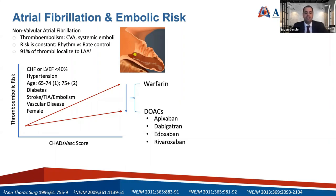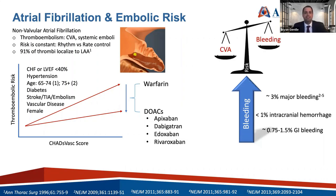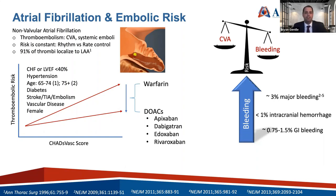When we start oral anticoagulants, there is a risk of bleeding — but not all bleeding is created equally. A cut on your arm is relatively minor, whereas an intracranial hemorrhage is much more substantial. From the seminal New England Journal papers, there is about a 3% risk of major bleeding, about a 1.5% chance of GI bleeding, and less than 1% chance of intracranial hemorrhage. It's easy to know what to do when thromboembolic risk outweighs bleeding risk, but what do we do when bleeding risk outweighs thromboembolic risk?